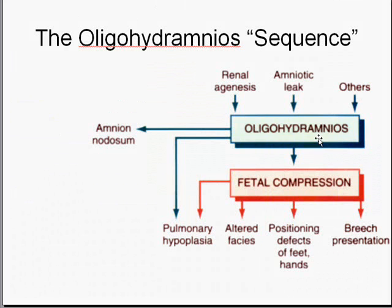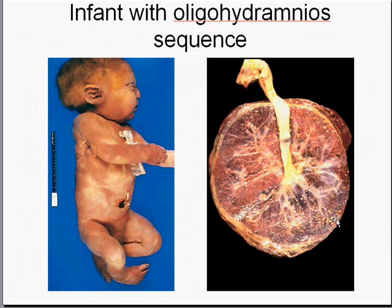Here we go — oligohydramnios causes shown up here, with fetal compression being the main effect, and here are the multiple effects of fetal compression. In addition, there is amnion nodosum, which means there are little nodules in the amnion, possibly due to either leakage or other problems — another effect commonly observed in Potter's sequence. See these little nodules here along the amnion? This is amnion nodosum. They may very well have squamous metaplasia as well. And here is a general effect including club foot, of generalized fetal compression due to lack of amniotic fluid.